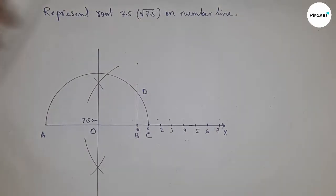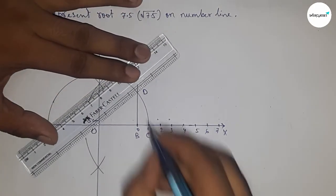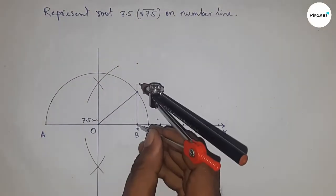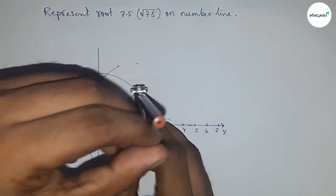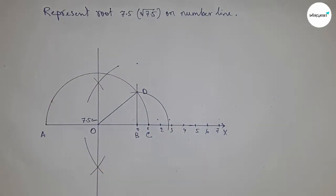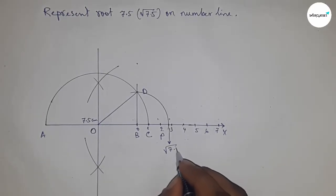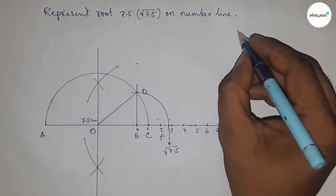Now joining this, which meets the semicircle at point D. Next, joining O and D. Now taking the length BD by compass to draw an arc which meets the number line at point E, and this is the representation of root 7.5 on the number line.